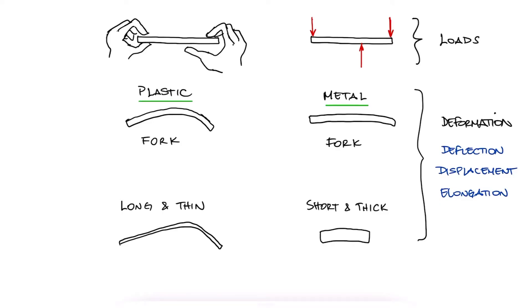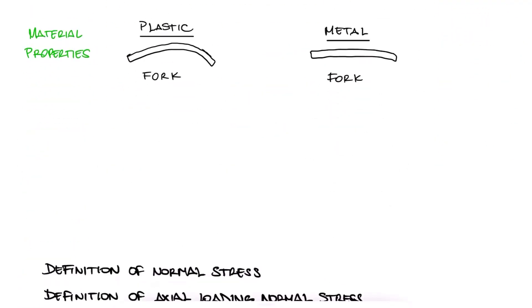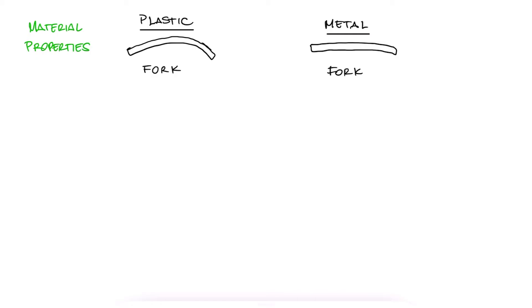We have to account for both material properties and geometry. More importantly, going back to the plastic versus metal fork example, if we want to find the load needed for the metal fork to reach the deflection of the plastic fork, we might find that the required forces are so high that the metal fork would yield or even break before reaching the desired deflection. In this case, again, it's not about the loads, but the stresses the material is subjected to.